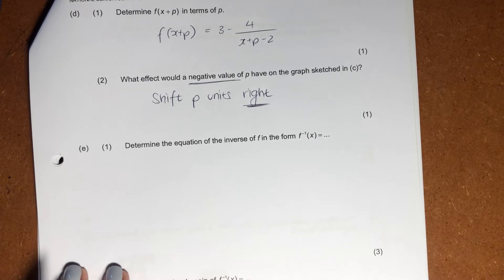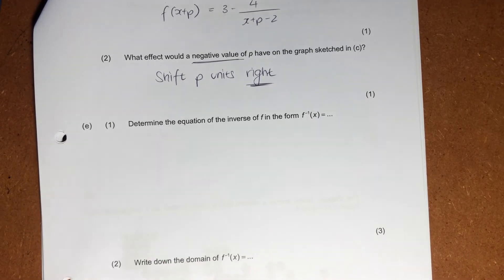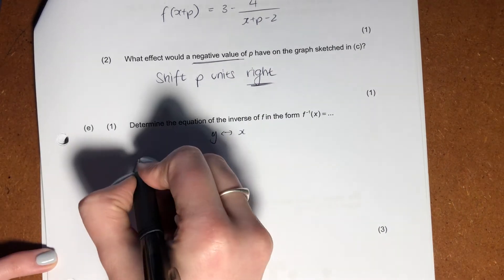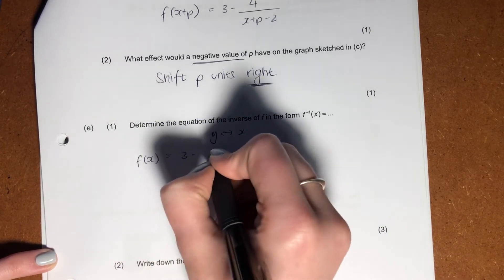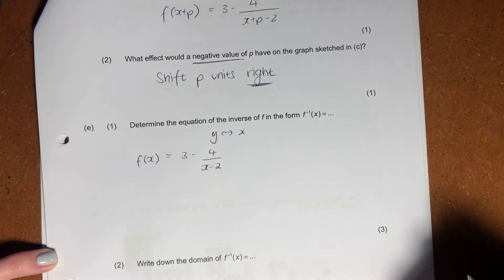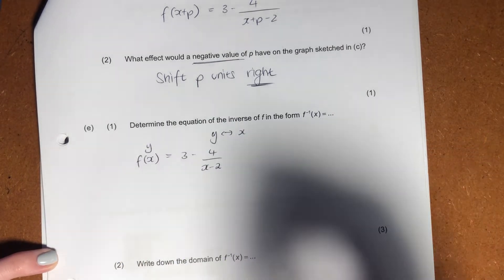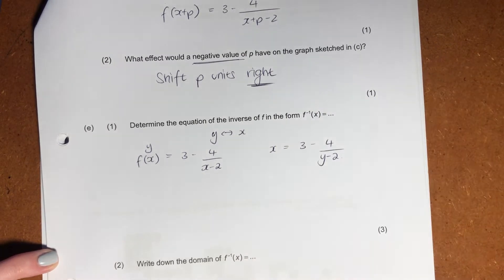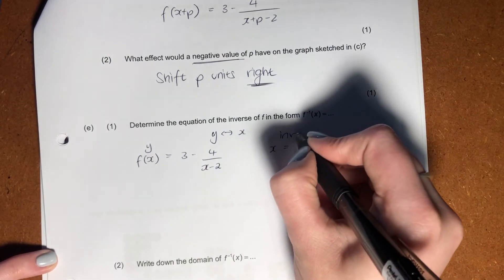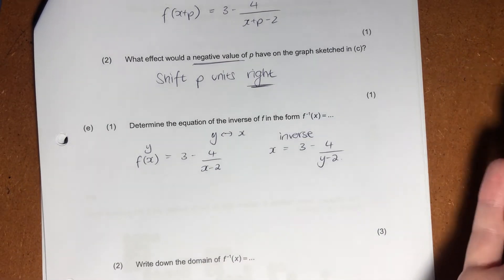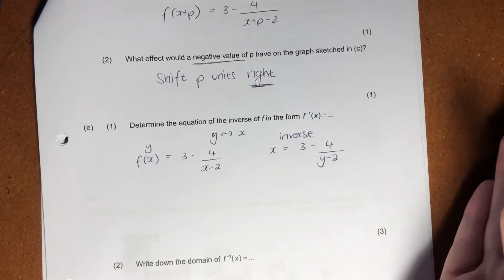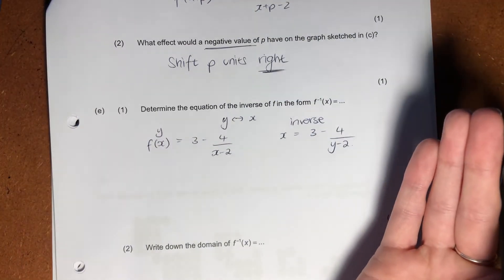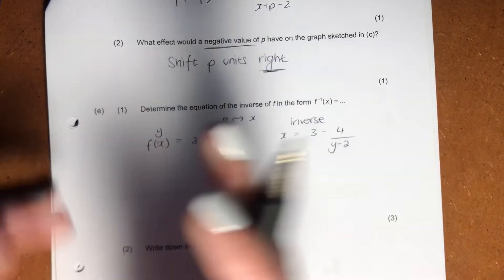Now, the question that everyone dreads, it is the inverse question. So now remember, inverse basically means we swap our x and our y. So originally, we had f of x equals three minus four over x minus two. And this is effectively our y. We're now going to swap these. So it's going to become x equals three minus four over y minus two. That's what the inverse is. But remember, we never ever write equations in terms of x. We always write them in terms of y.